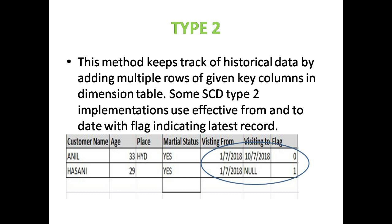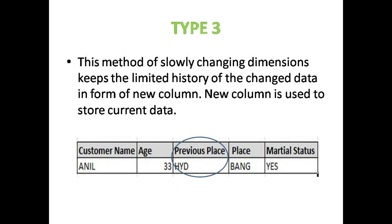Type 2 stores multiple rows for given key columns in the dimension table, whereas Type 1 stores only current data and does not keep historical data. In Type 3, the Slowly Changing Dimension keeps a limited history of changed data in the form of a new column. The new column is used to store current data. For example, the original table has Anil, 33, Hyderabad, yes. When he transfers to Bangalore, both the previous place Hyderabad and the present place Bangalore are kept in the same table via a new column.